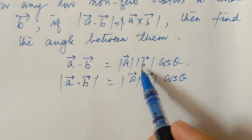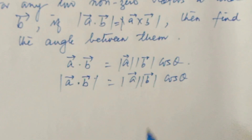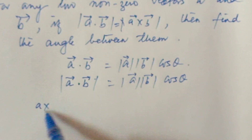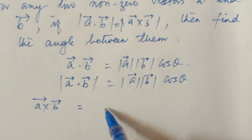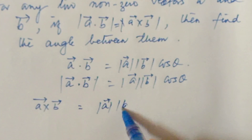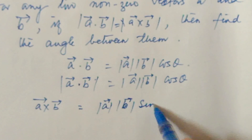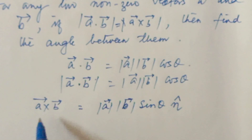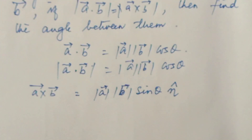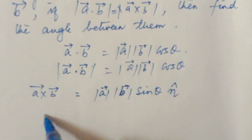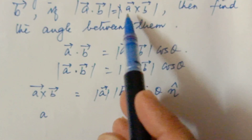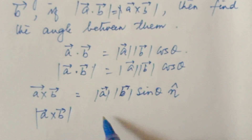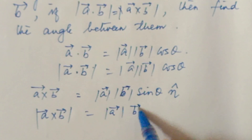The magnitude of a dot b is just magnitude of a times magnitude of b times cos theta, since all values are scalars. For a cross b, it equals magnitude of a times magnitude of b times sin theta times the unit vector along a cross b. The magnitude of a cross b is therefore magnitude of a times magnitude of b times sin theta, since the unit vector has magnitude 1.